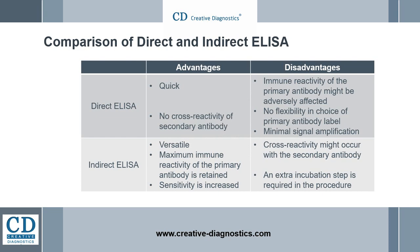For disadvantages: the immune reactivity of the primary antibody in direct ELISA might be adversely affected by labeling with enzymes. In addition, there is no flexibility in choice of primary antibody label from one experiment to another, and there will be minimal signal amplification. For indirect ELISA, cross-reactivity might occur with the secondary antibody, and an extra incubation step is required in the procedure.